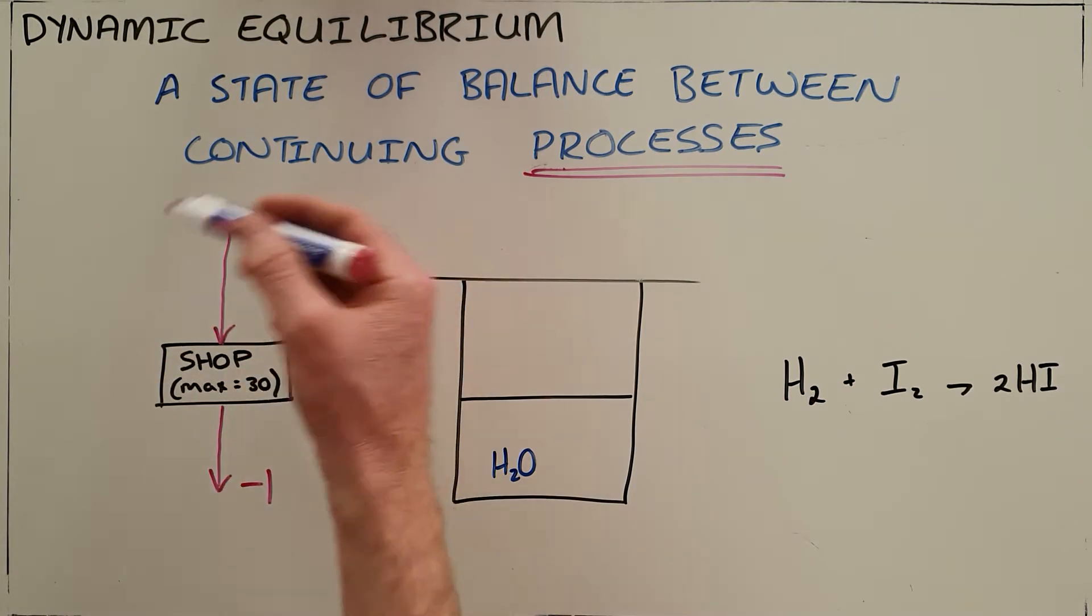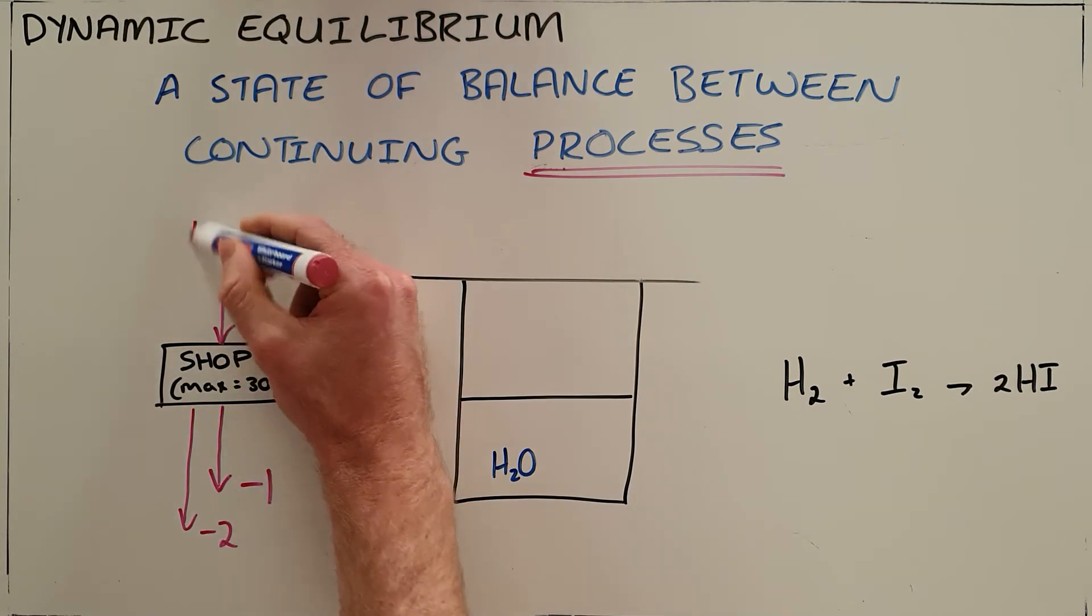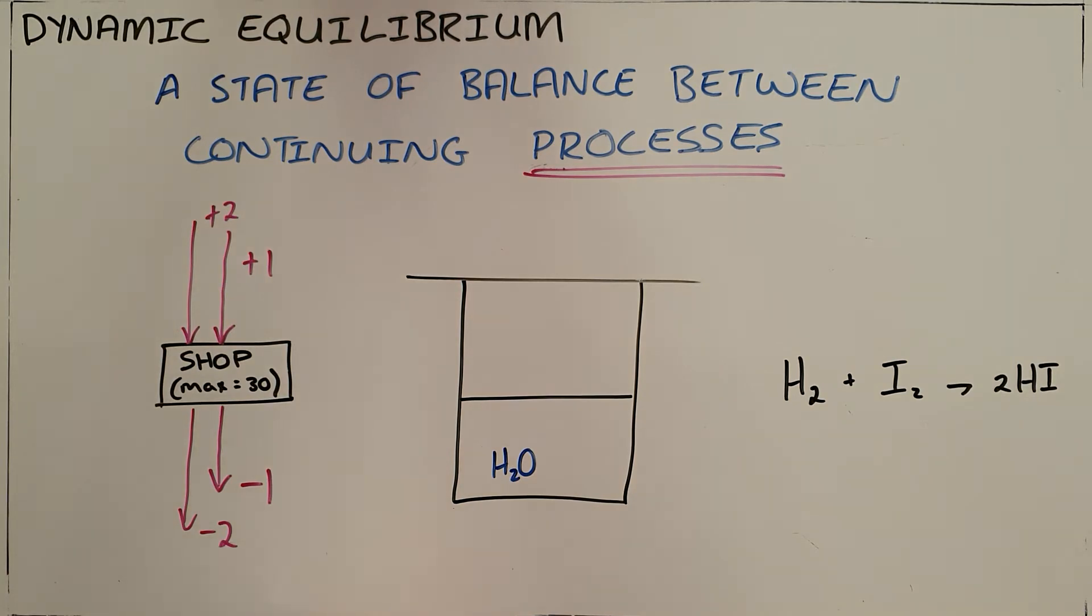But it's dynamic because it's constantly changing. When two people leave, two people are allowed to enter. That is a simple example of a dynamic equilibrium.